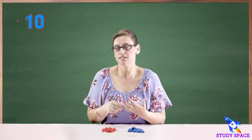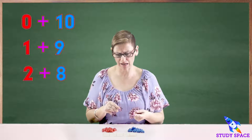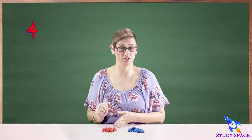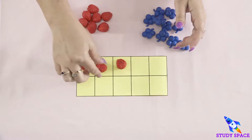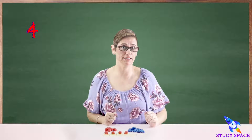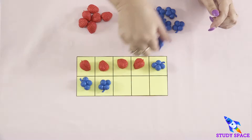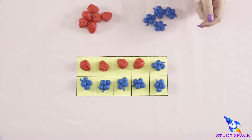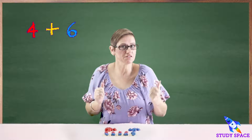So we've done zero plus ten, one plus nine, two plus eight, three plus seven. So maybe this time I need four strawberry friends — one, two, three, four. How many blueberry friends am I going to need? Let's count: one, two, three, four, five, and six. So four plus six — more friends of ten.